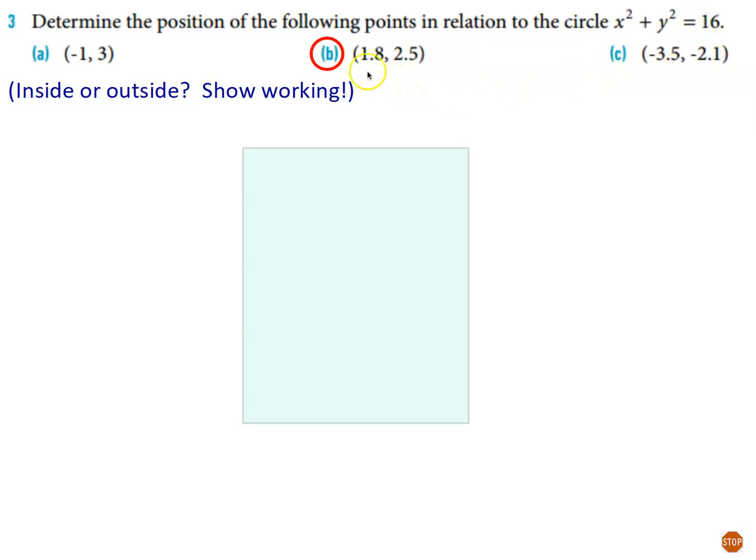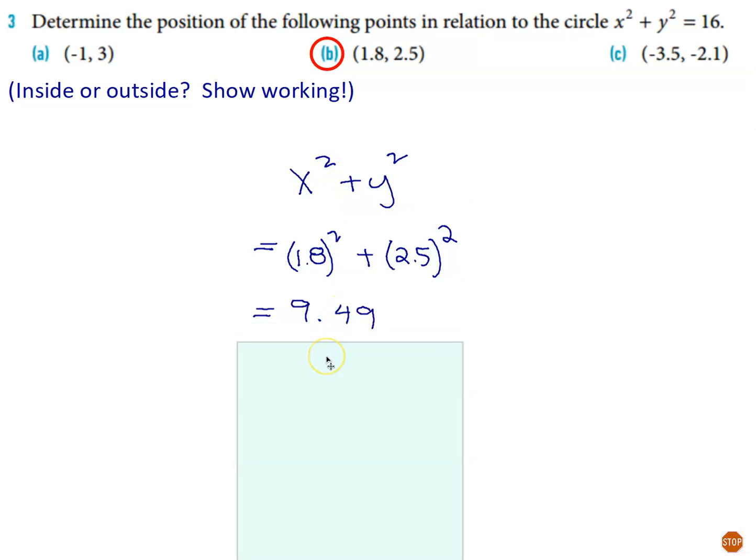Okay, so what I'm doing here, to solve it, that's x, 1.8, that's x, and that's y. So I'm just going to square x, square y, add them together, and see if the total is less than 16, equal to 16, or greater than 16. So, x squared plus y squared equals 1.8 squared plus 2.5 squared, which adds up to 9.49. That's less than 16, so therefore, that point must be inside the circle.